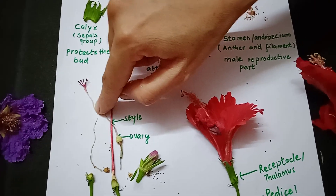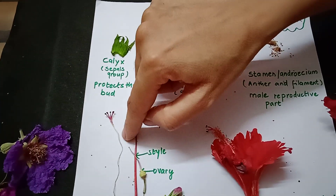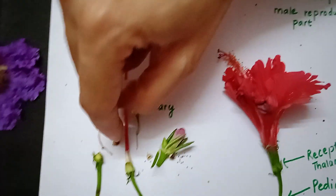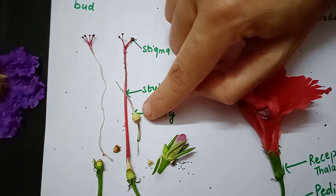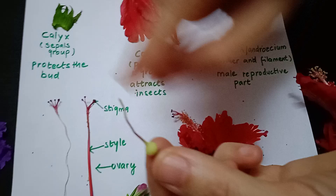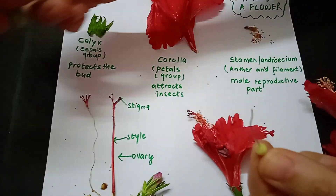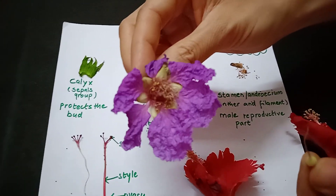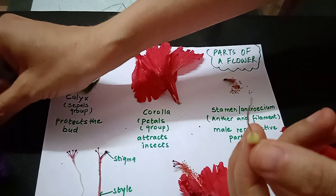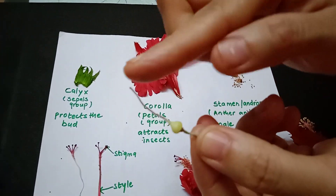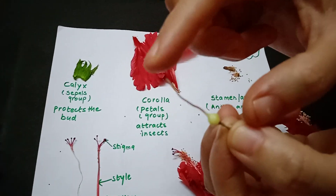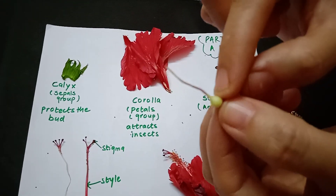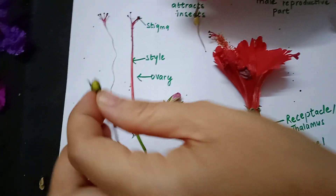The style is attached to the ovary. I've shown the ovary of a hibiscus flower here, and also the ovary of a jarul flower — also called pride of India, the state flower of Maharashtra. When cut open, you can see the female reproductive part: stigma at the top, style, and the ovary.